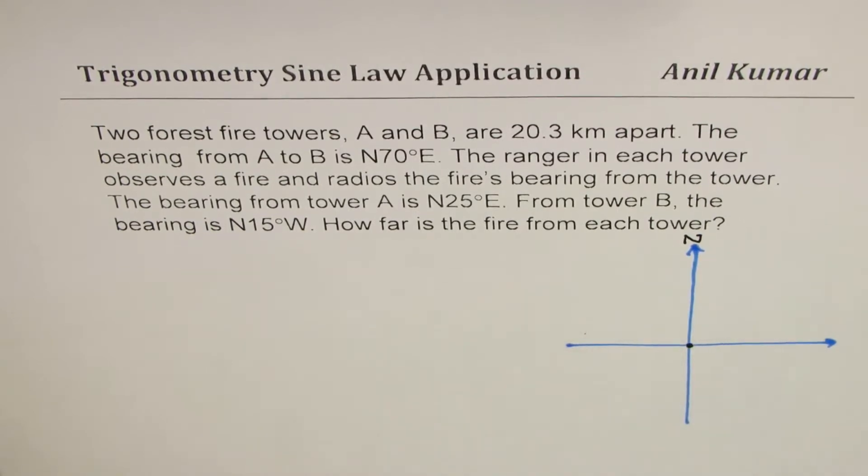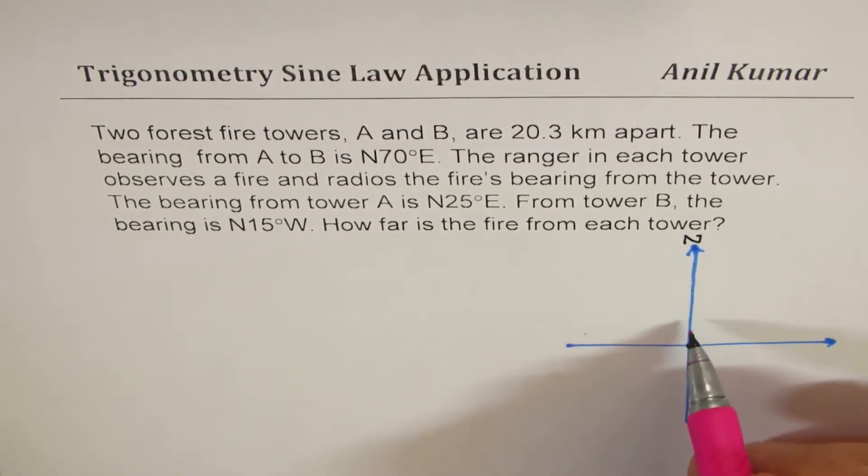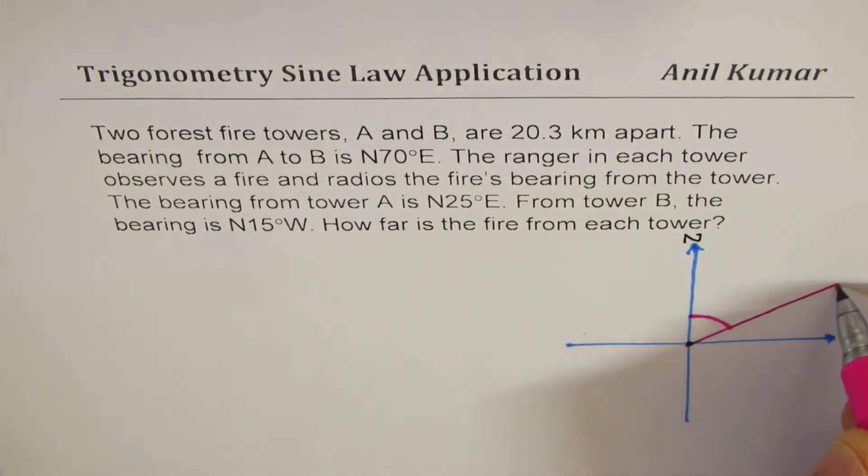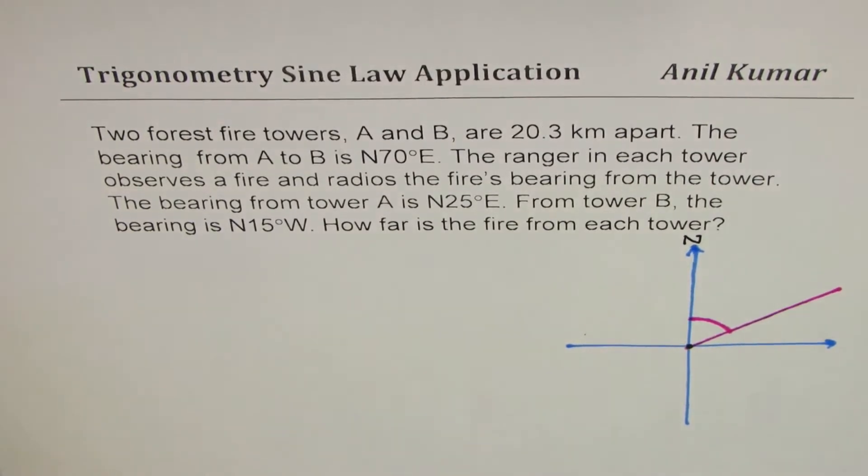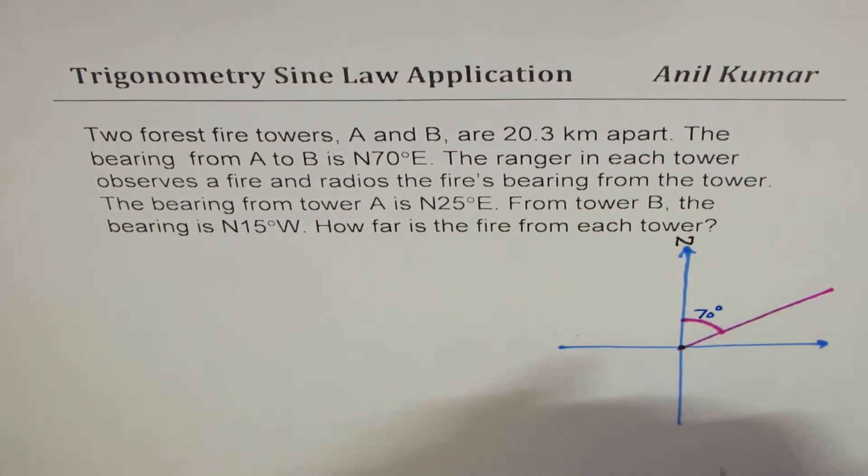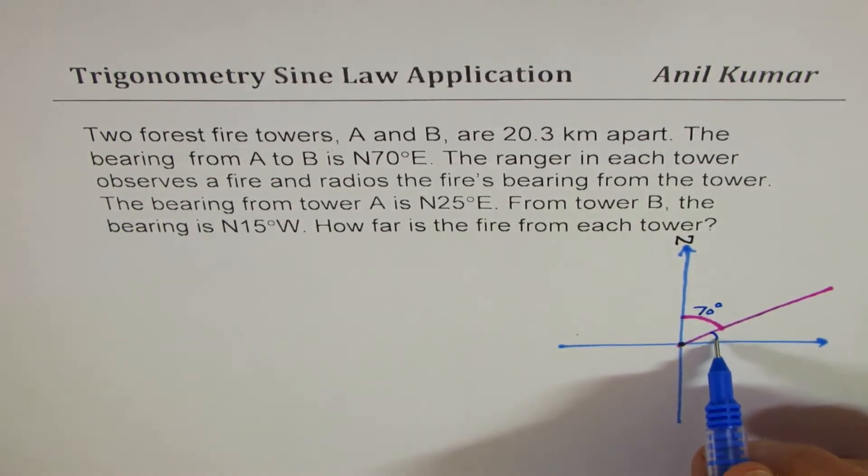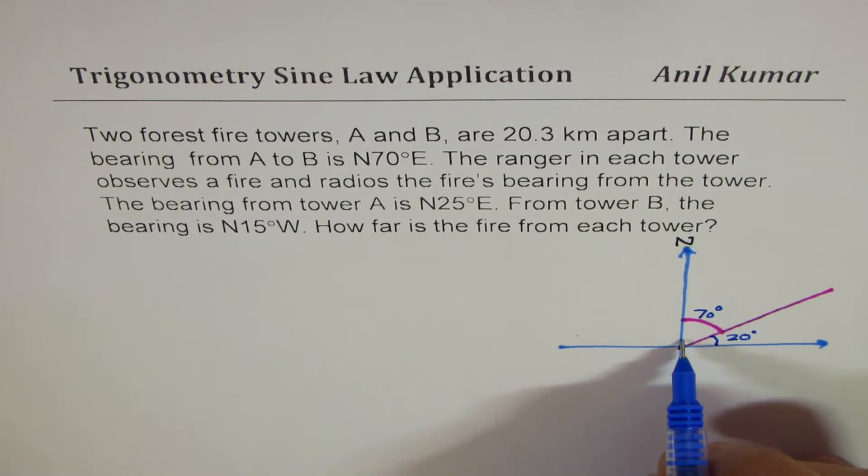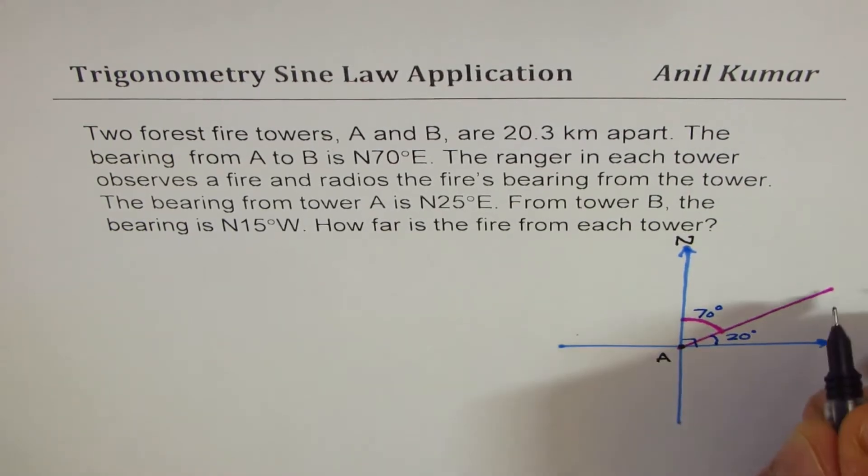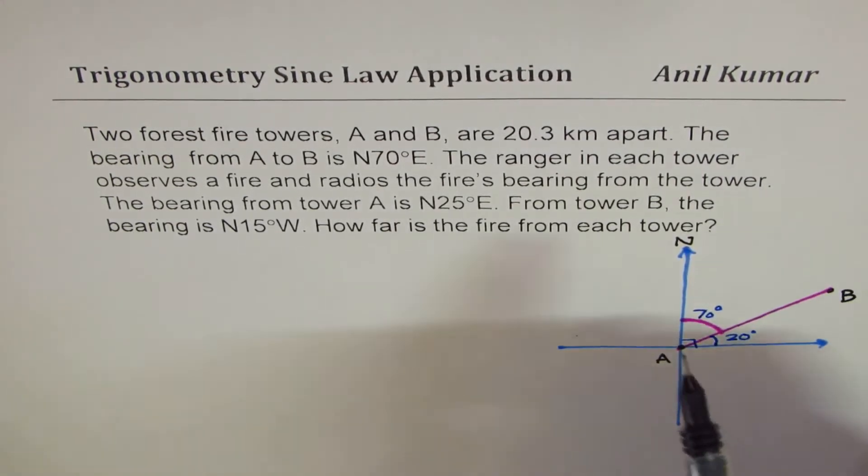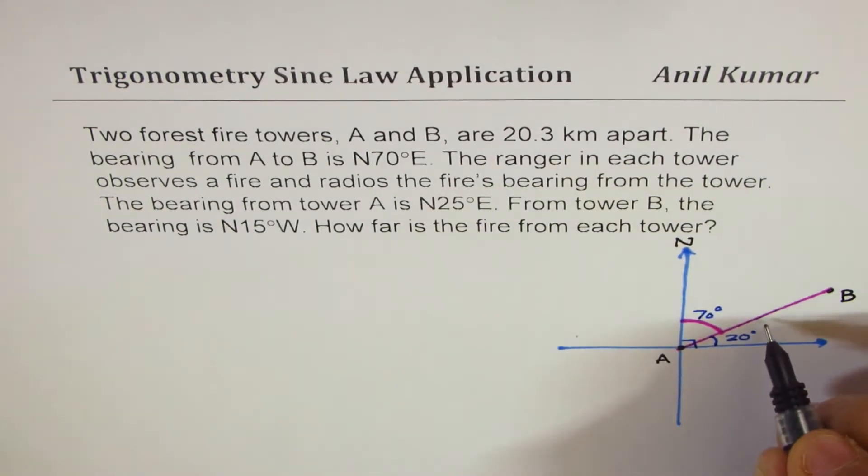So let us say, let me take another ink. So 70 degrees east, so let us say that becomes the position of B. Now if this is 70 degrees, in that case, the angle with the horizontal is going to be 20 degrees. So let's call this point A at the origin and B,